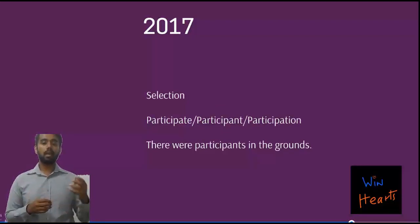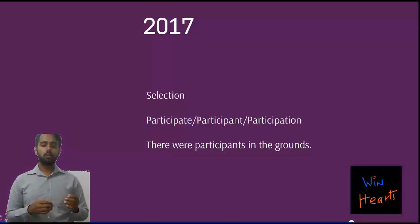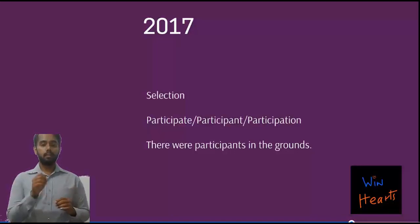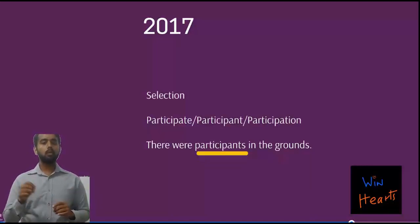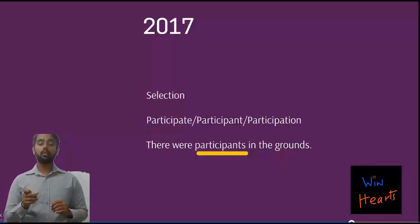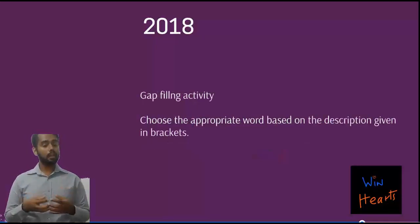In 2017, it came up as an array of word selection. For example, you would be given words such as 'participate', 'participant', and 'participation' — three words — and you had to fill in the blank, such as 'There were ___ in the grounds.' The correct answer would be 'participants', so you choose the correct word from the three options and fill in the blank.